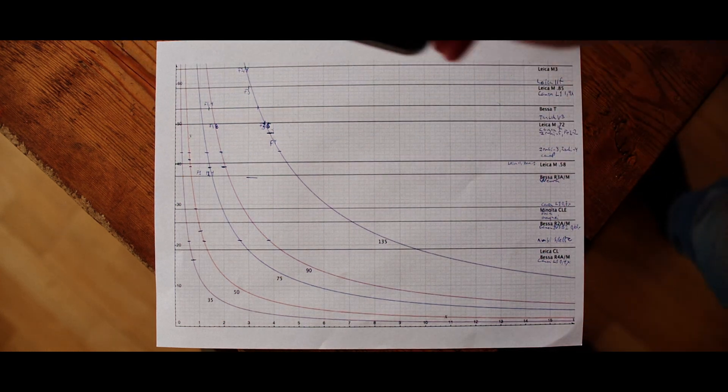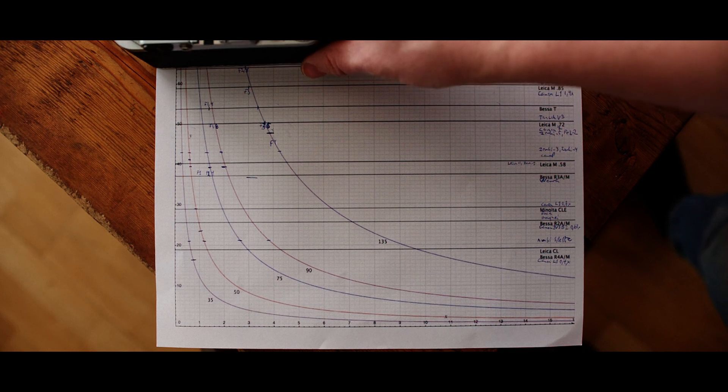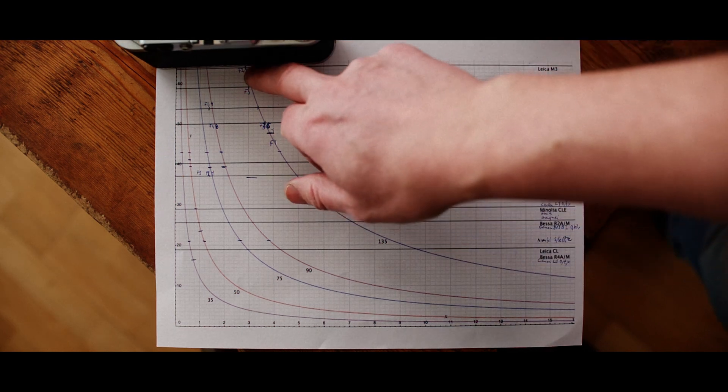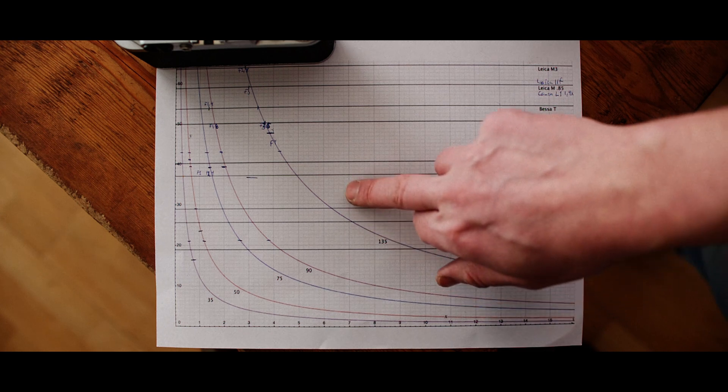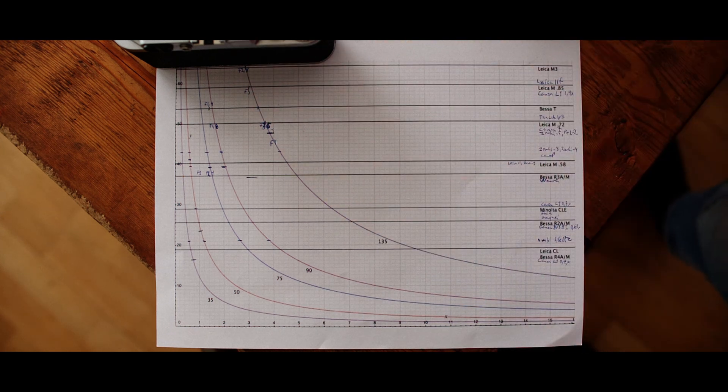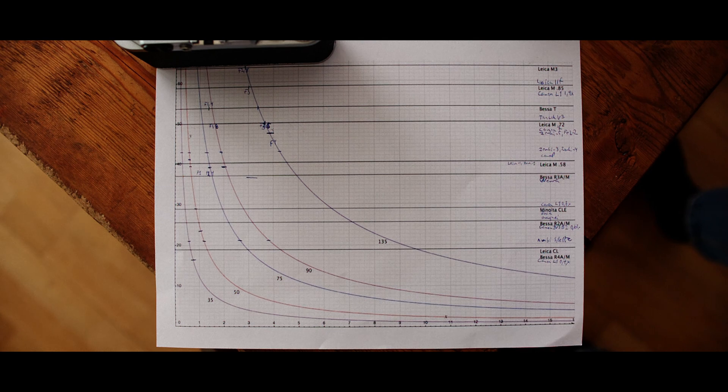It would be just over f/3 at 135. The rest basically no problem. So what did Leica do then? Well when they did the M3. Good for 135 f/2.8.